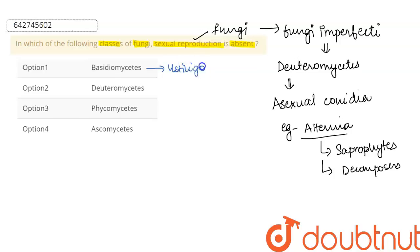Now let's see what are the options given to us. Basidiomycetes - the example of basidiomycetes is Ustilago. We have already seen deuteromycetes which is fungi imperfecti. Phycomycetes - the example is Rhizopus.